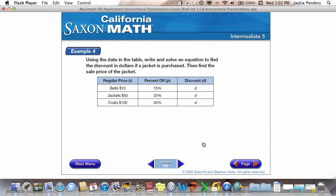Example 4: I'm going to use the data in the table to write and solve an equation to find the discount in dollars if a jacket is purchased. Here we have column 1, the regular price of a belt, of a jacket, or of a coat. The next column gives me my percent off. If I buy a belt, I get 15% off. A jacket, 20% off. And a coat, 30% off. D represents my discount. What is the price of the jacket if I get a 20% discount? Here's how we have to find this. I'm looking for my discount.